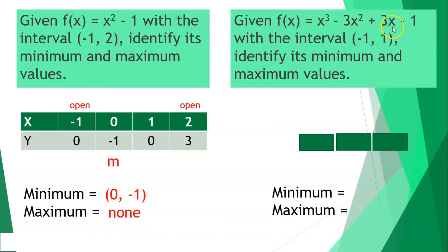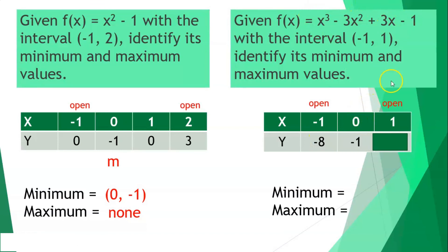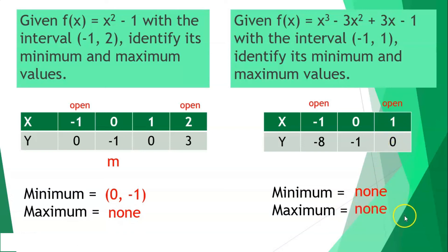Given x cubed minus 3x squared plus 3x minus 1 with the open interval from negative 1 until 1, using x = negative 1, 0, and 1. At x = negative 1, y = negative 8; at x = 0, y = negative 1; at x = 1, y = 0. The minimum would be negative 1, negative 8, but since it is open, the minimum is none. The maximum would be 1, 0, but since it is also open, the maximum is none.